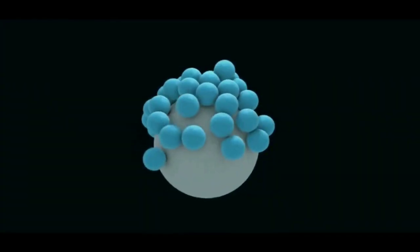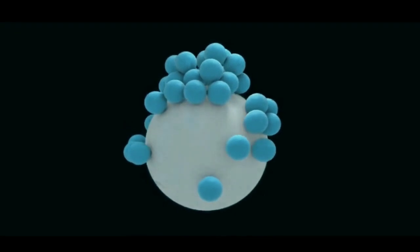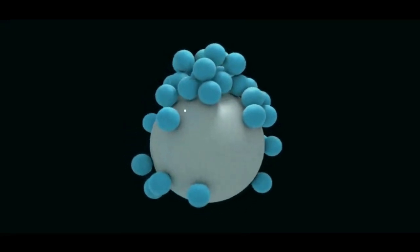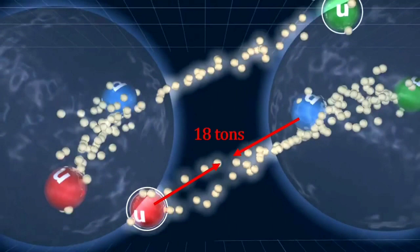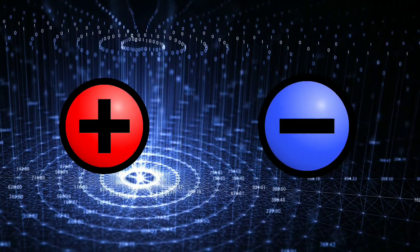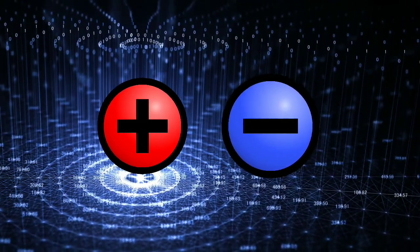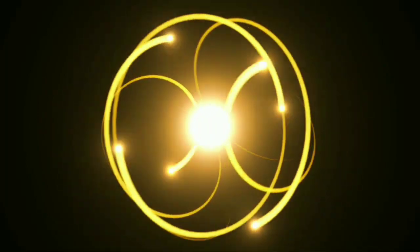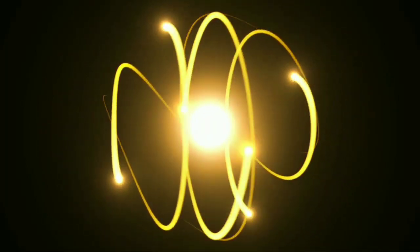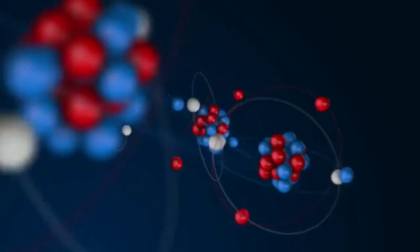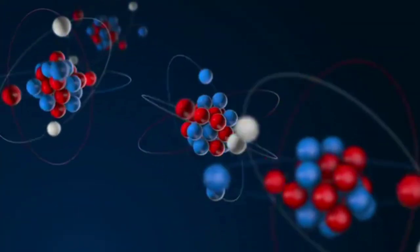Much like the weak force, the strong force operates only when subatomic particles are extremely close to one another. They have to be somewhere within 10 raised to the power minus 15 meters from each other, or roughly within the diameter of a proton. It gets stronger as subatomic particles move closer together. It actually reaches maximum strength when the particles are farthest away from each other. Protons in the nucleus repel one another because of their similar charge, but the residual strong force can overcome this repulsion, so the particles stay bound in an atom's nucleus.